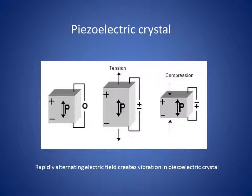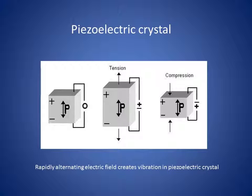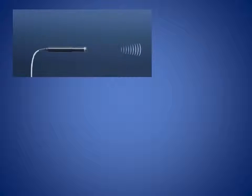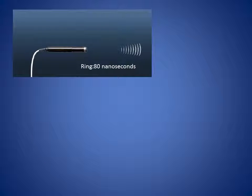If the electric field is reversed, the effect on the material is reversed. If the electric field keeps reversing, the material alternately contracts and expands, so a rapidly alternating field causes the material to vibrate. In an ultrasound probe, a rapidly alternating electric field is passed across an array of crystals, causing them to vibrate and emit a high frequency sound wave.